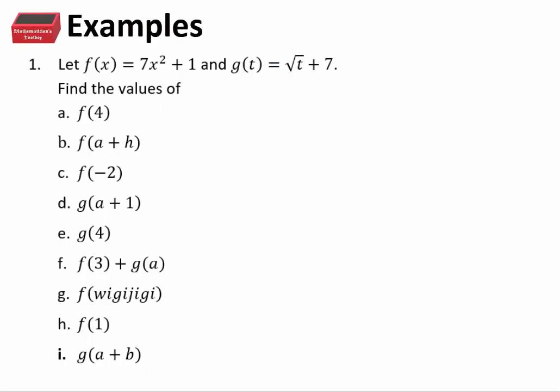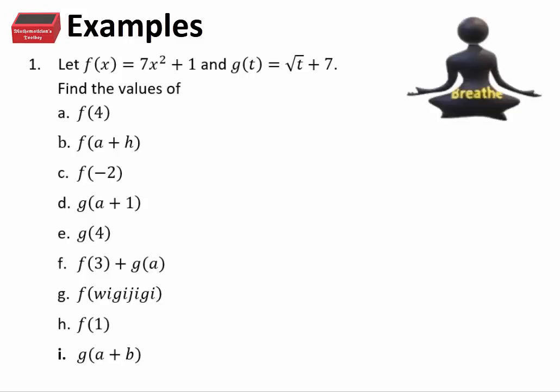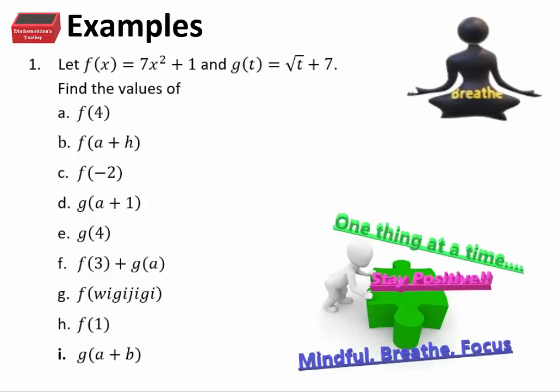Let's do some examples. Here are two functions: f of x equals 7x squared plus 1, and g of t equals square root of t plus 7. I want you to not just mechanically do the problem, but also in your head explain what it means, how to compute it, and how to read it. There are lots of studies that show if you learn how to read and write correct mathematics, you will process it correctly. And remember, if you are starting to panic, just breathe, stay focused, do one thing at a time.